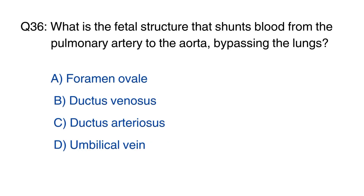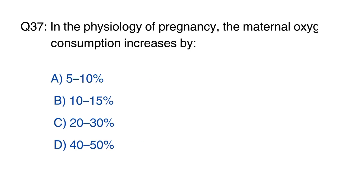Question 36: What is the fetal structure that shunts blood from the pulmonary artery to the aorta, bypassing the lungs? The right option is C, ductus arteriosus.